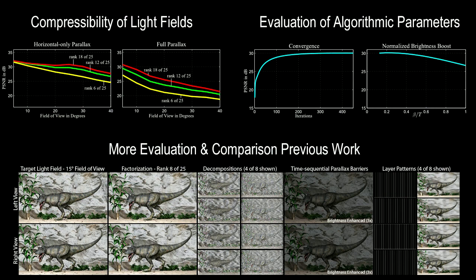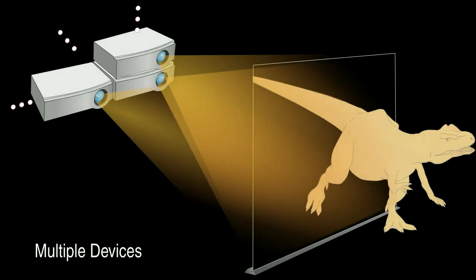In the paper, we evaluate the compressibility of light fields in algorithmic parameters. We also compare the factorization approach to conventional time-sequential parallax barriers, which are significantly darker and require higher-speed SLMs. We also describe extensions to the proposed system, such as arranging multiple projectors vertically to achieve higher rank light field decompositions, or horizontally to increase field of view.